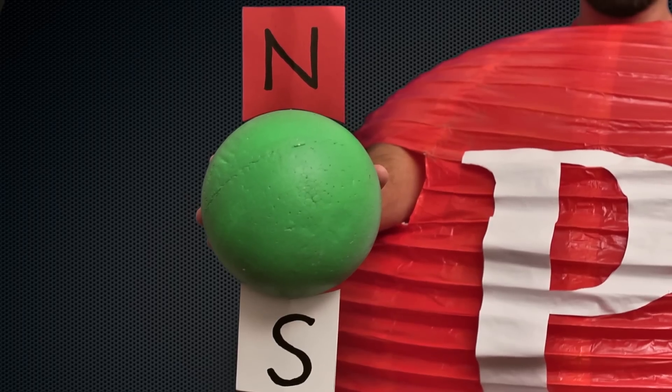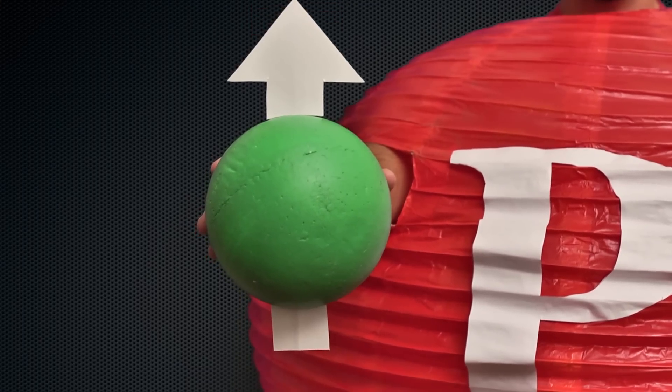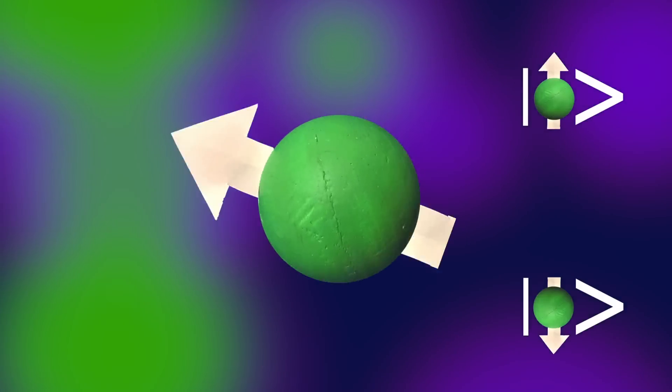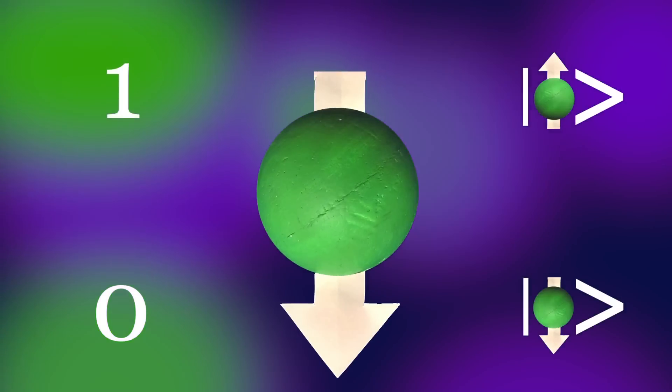The electron has a magnetic dipole called its spin, and it has two orientations — up or down — which are like the classical one and zero. To differentiate the energy state of the electron when it's in spin-up and spin-down, you need to apply a strong magnetic field, and to do that we use a superconducting magnet.